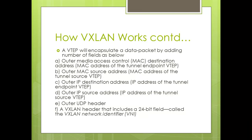How exactly does encapsulation happen? A VTEP encapsulates a data packet by adding the following fields: outer destination MAC address — the MAC address of the tunnel endpoint, that is the VTEP where the tunnel ends; outer source MAC address — the MAC address of the VTEP where the tunnel originates; outer IP destination address — the IP address of the tunnel endpoint VTEP, usually a loopback address.